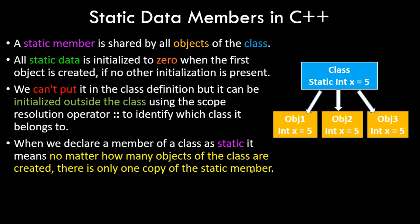Imagine a class with an integer variable. If we make it static and initialize it to five, any object we create will share the same copy — there is only one copy of that data member shared among object one, object two, object three, and so on. In general, non-static members give every object its own variable with different values.